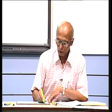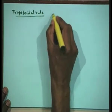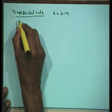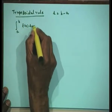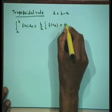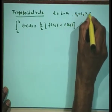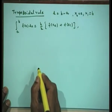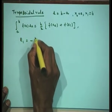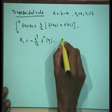The first formula is the trapezoidal rule, in which the step length h is taken as b minus a. The formula is: integral from a to b of f dx equals h/2 times (f(x0) + f(x1)), where x0 = a and x1 = b. The error expression is R1 = -h³/12 · f''(η), where η is any number between a and b.